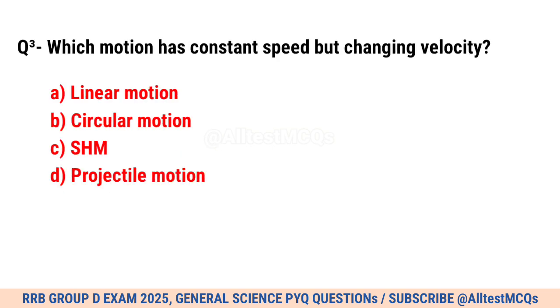Question No. 3. Which motion has constant speed but changing velocity? Right option is B. Circular motion.